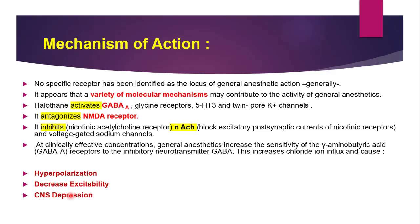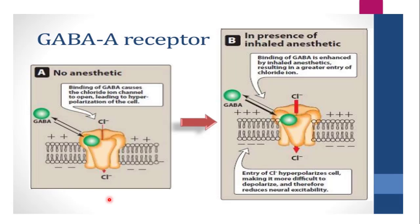Halothane acts in coordination with GABA at the GABA-A receptor, leading to hyperpolarization of the membrane. Due to hyperpolarization, excitability is decreased, inhibitory effect is achieved, and CNS depression can be seen. This is the simplest and prime mechanism by which Halothane acts. Looking at the diagram: this is the GABA-A receptor. Binding of GABA causes the chloride ion channel to open, resulting in hyperpolarization of the membrane.